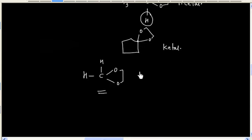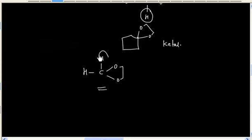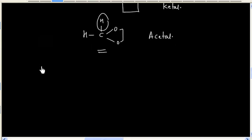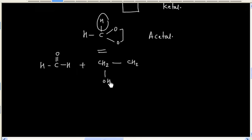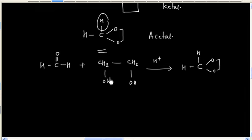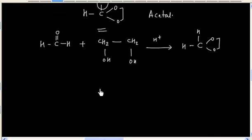So what about this molecule? This has a hydrogen, so this is an acetal. Basically this is the acetal of formaldehyde. If you consider this reaction in acidic medium, you will have this product. So this is basically the acetal of formaldehyde.